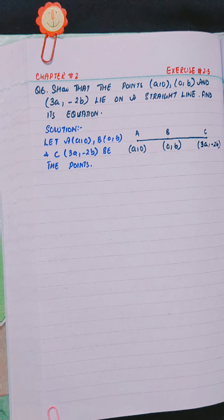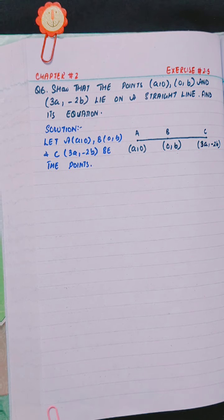Let A(a,0), B(0,b) and C(3a,-2b) be the points.